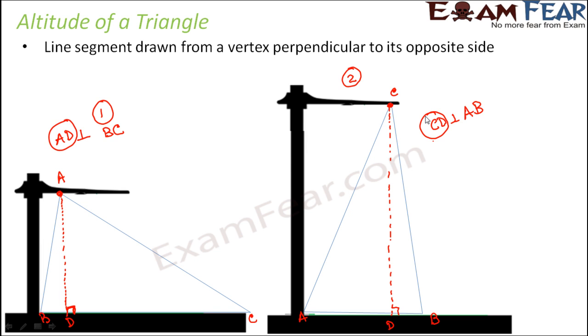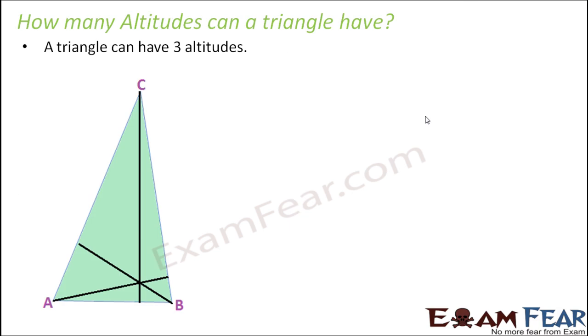I hope the concept is clear. Now, try to compare this altitude with the median that we had learnt before. As I was telling just now, any triangle can have three altitudes. Let us look at this triangle ABC. The altitude from A would be this perpendicular drawn on BC. Similarly, the altitude from B would be the perpendicular drawn on AC. Similarly, the altitude from C would be the perpendicular drawn on AB. A triangle can have three altitudes.